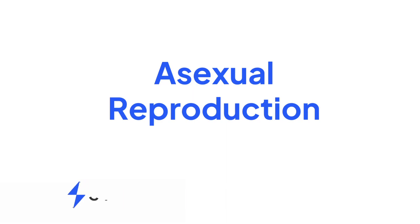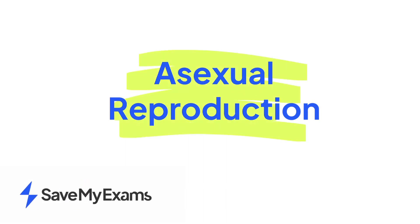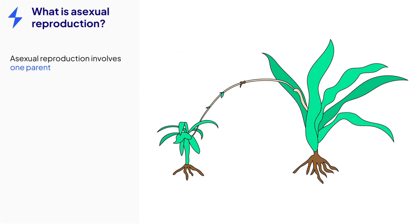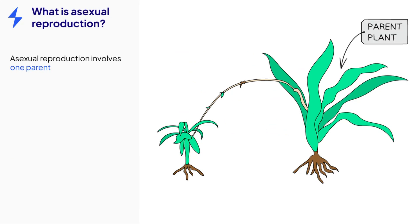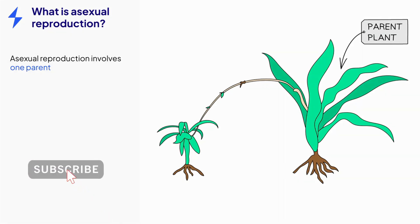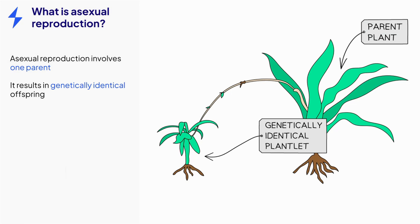This video is on the topic of asexual reproduction. Let's start by thinking about what asexual reproduction is. It's a form of reproduction that only involves one parent rather than two, so there's no fertilization or fusion of gametes such as a sperm or egg. There is no mixing of genetic information, so the offspring produced are all genetically identical to each other and their parent. They can also be known as clones.